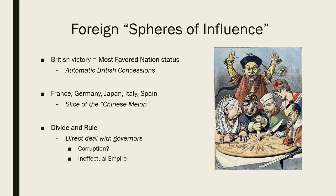Once Britain had these concessions, other world powers immediately showed up with their navies and armies demanding what one British diplomat in the 1890s called 'a slice of the Chinese melon.' France, Germany, Japan, Italy, and Spain all vied for pieces of China. China had vast natural resources — coal, steel, tea, silk, dyes, exotic foods — and later, vast oil reserves in places like Manchuria.